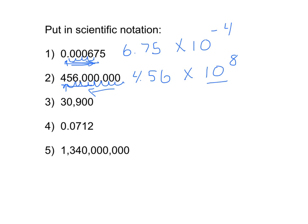For number three, the one digit that's not zero in front of the decimal place will be a three. So we'll have three point oh nine times ten. And we're moving the decimal from here one, two, three, four places. It will be positive because this is a big number and we're moving the decimal to the left.